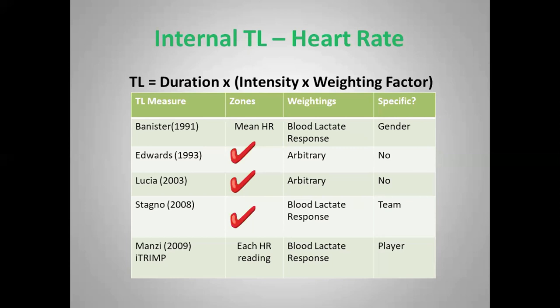Edwards' TRIMP is probably the most arbitrary measure of them all — five zones, each 10% wide from 50 to 100%, with weightings of one, two, three, four and five — with no real specific underpinning for that weighting. Lucia's TRIMP is based on a three-zone model; the weightings are arbitrary but at least the zones are pinned on physiological thresholds. Stagno's version of the TRIMP was based on the lactate response but was specific only to the team.